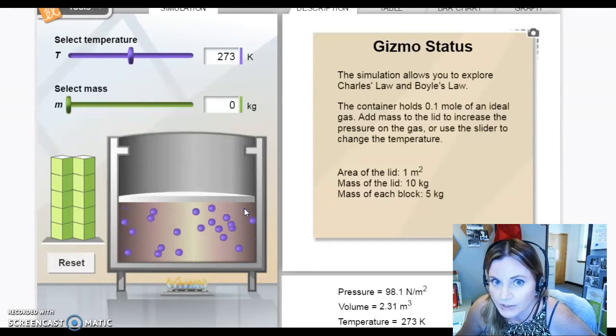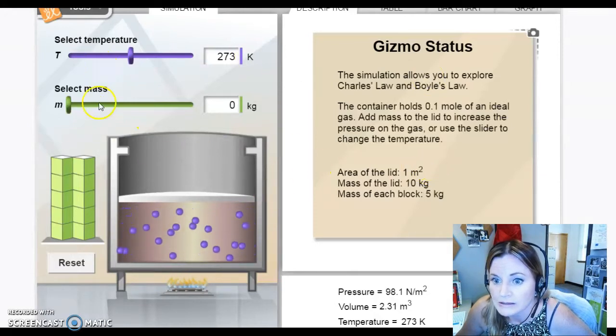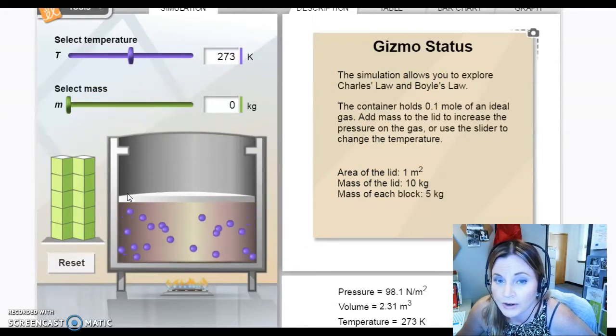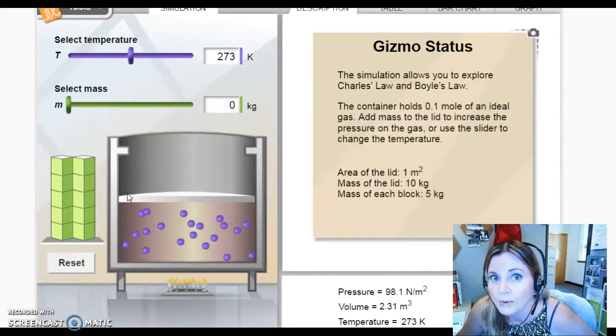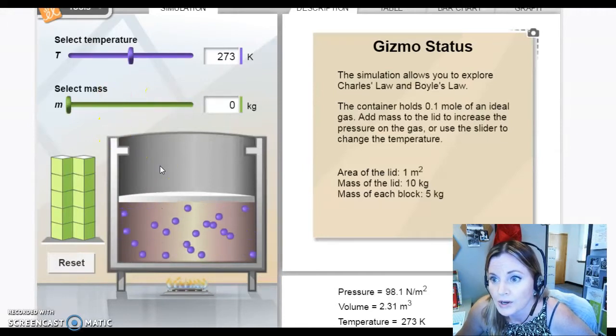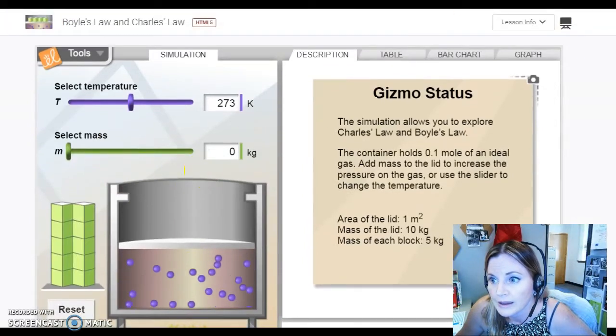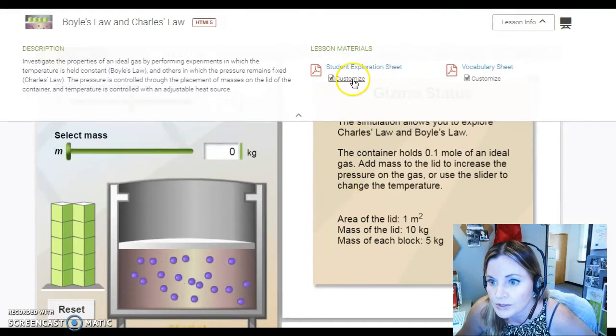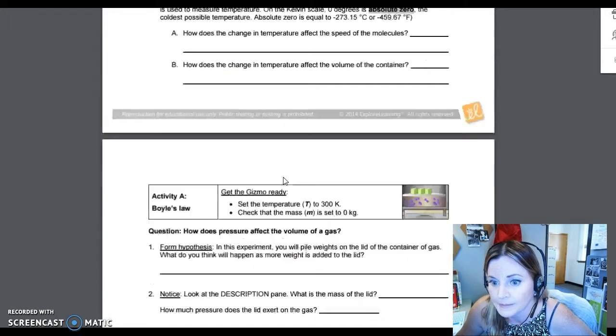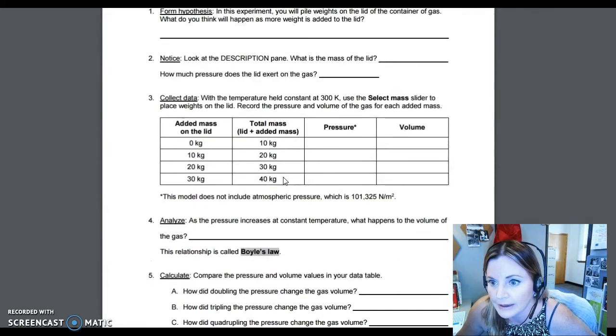What you're going to be doing is you're going to actually be doing this as your portfolio. So you're not going to imagine an activity or do something at home with this activity. You're actually going to be using this simulation. If you go under lesson info and you go to the student exploration sheet, you will be doing activity B like boy. So you can skip A and you're going to do activity B.